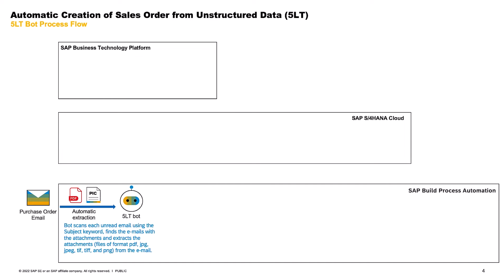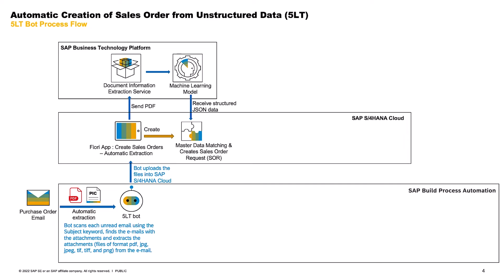When the first scenario, Create Sales Order Request, is executed, the bot scans each unread email in the sales representative's inbox, searching for keywords in the subject line. It then extracts the attachments from the corresponding emails and uploads the files into the Create Sales Order Automatic Extraction Fiori application. This application creates a sales order request and uploads the email attachments to a Document Information Extraction Service, which extracts relevant information from the attachments and adds this information to the sales order requests.